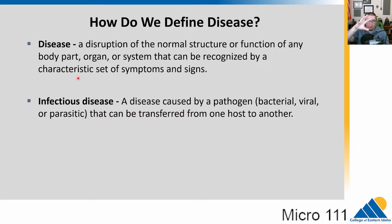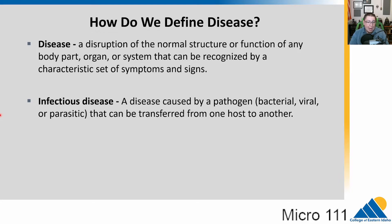A disease is the broad term — that could be cancer, diabetes, or heart disease. But an infectious disease is a specific one, like SARS-CoV-2, our COVID-19 disease caused by the virus SARS-CoV-2, or AIDS, which is caused by HIV. So infectious disease has something that causes it.